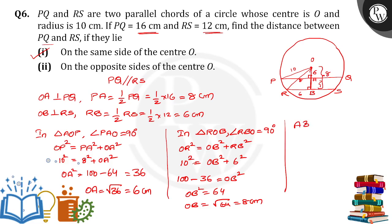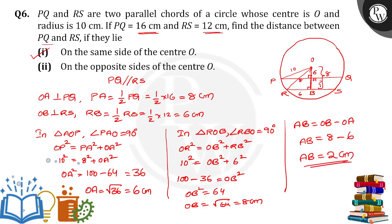AB is equal to OB minus OA. OB is 8 and OA is 6, so AB = 8 − 6 = 2 centimeters. So we got the distance between the two chords when they are on the same side of center O is 2 centimeters.